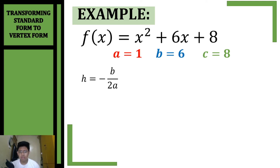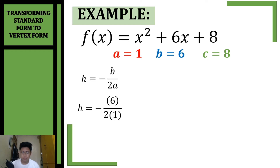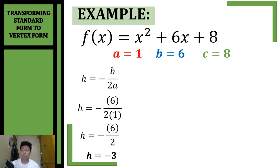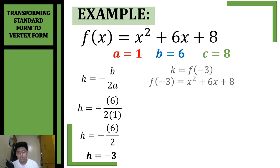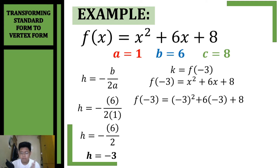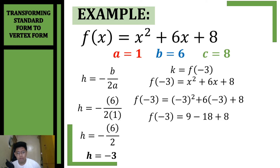Substituting the values of a and b: negative 6 over 2 times 1, simplifying we get negative 6 over 2, so h is equal to negative 3. From there, I will substitute the value of h into the original equation to get k. Substituting negative 3 for all x: negative 3 squared plus 6 times negative 3 plus 8. Simplifying: 9 minus 18 plus 8, combining like terms we get f(negative 3) is equal to negative 1.